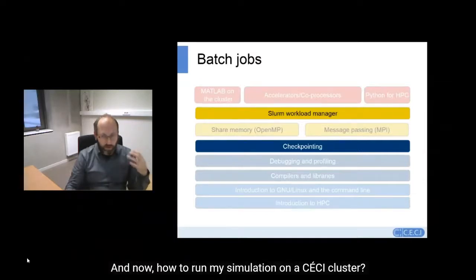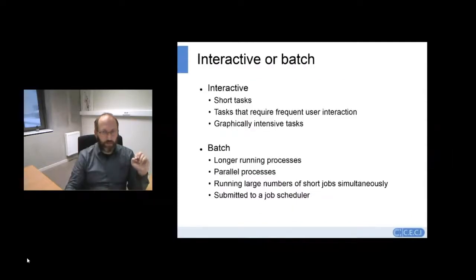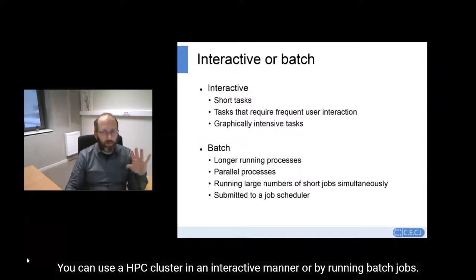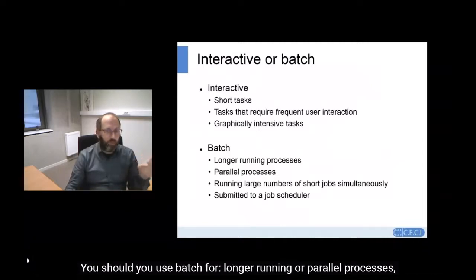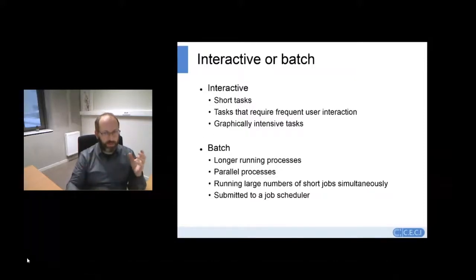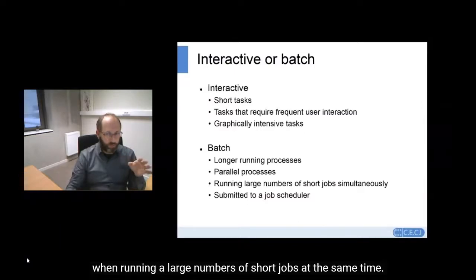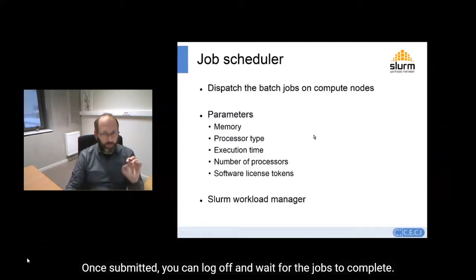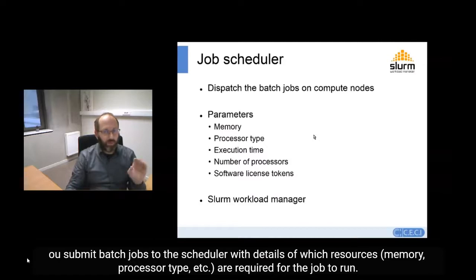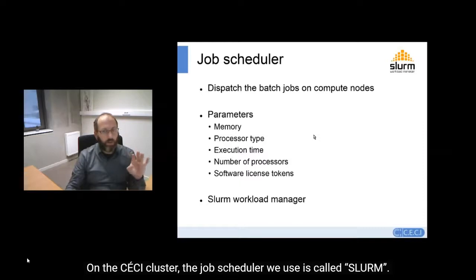Now, how to run my simulation on a CECI cluster. You can use a CECI cluster in an interactive manner or by running batch jobs. You should use interactive processing for short tasks and interactive practical applications. You should use the batch system for long-running or parallel processes, or when running a large number of short jobs at the same time. Batch jobs are submitted to a job scheduler, which manages a job queue and runs jobs on the compute nodes. Once submitted, you can log off and wait for the job to complete. You submit batch jobs to the scheduler specifying resources — memory, processor type, etc. — required for the job to run.